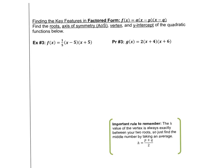Now we're in factored form. The superpower of factored form is that roots are easy — they're just the opposites of the values in the factors. So the roots here are x = 5 and x = −5. That was easy.